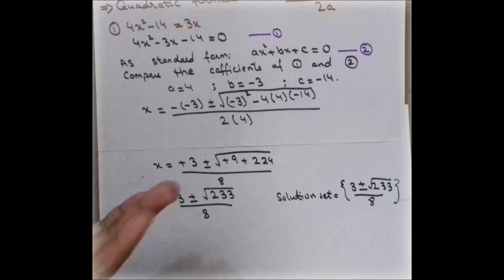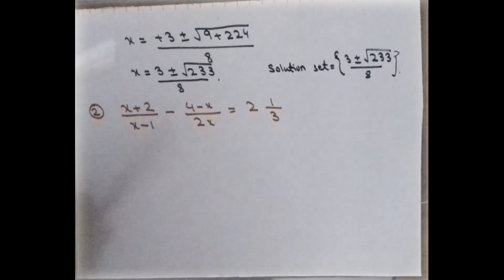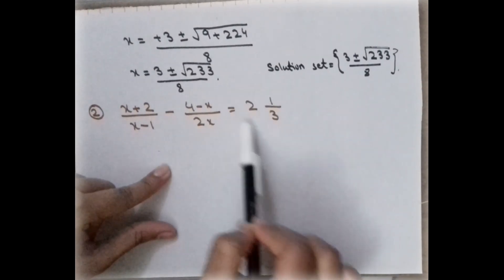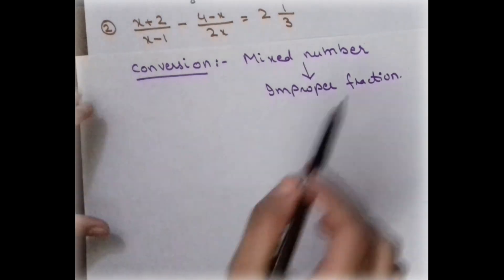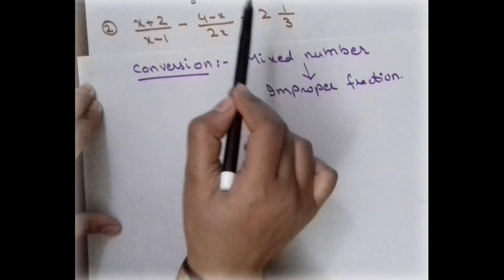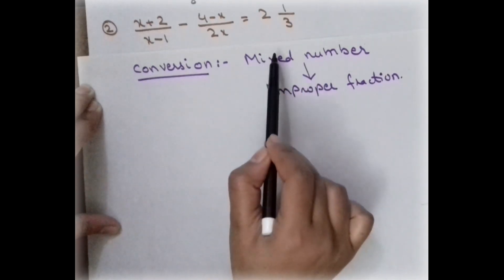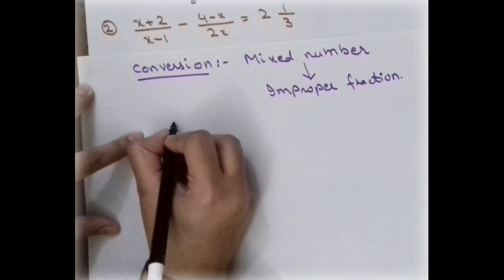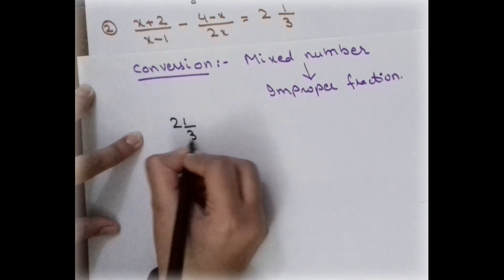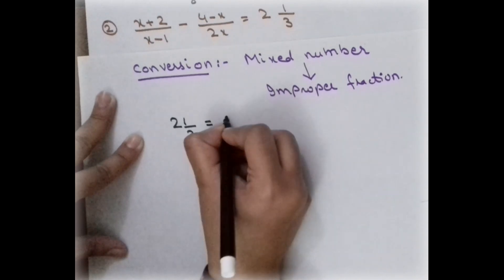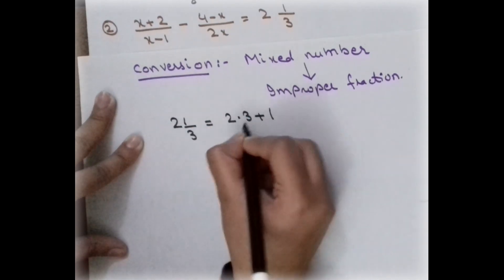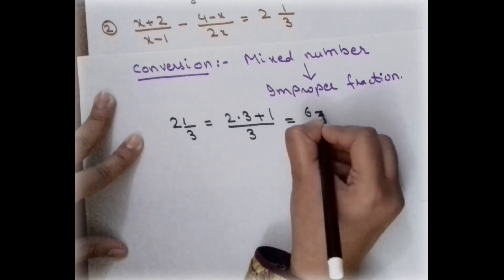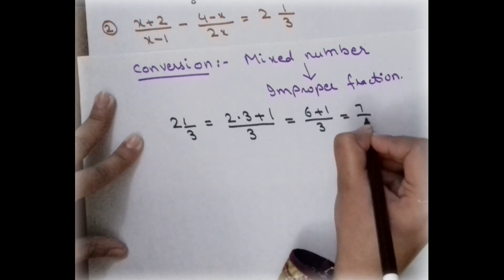Let us check out another example to understand how to use this formula on a different type of question. This question involves a mixed number, so first we have to convert the mixed number to an improper fraction. A mixed number is a combination of an integer and a proper fraction. For example, 2⅓ = (2×3 + 1)/3 = 7/3.